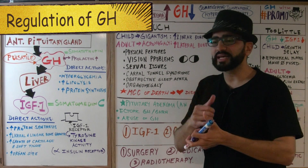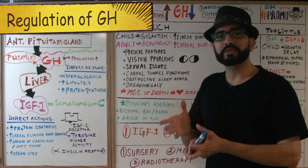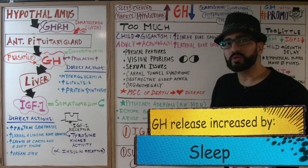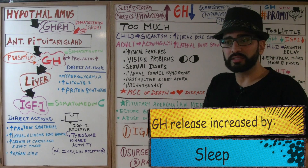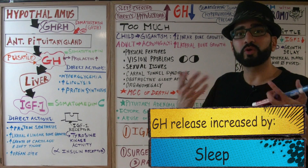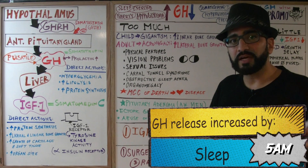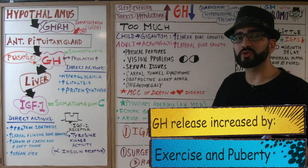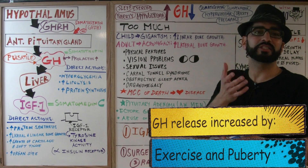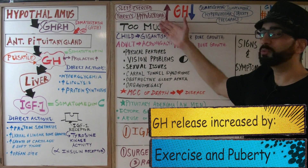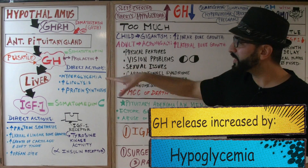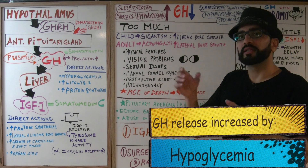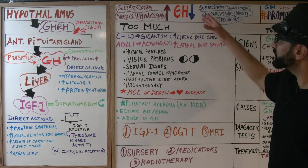Now let's talk about regulation — what increases and decreases growth hormone release. Things that increase growth hormone include sleep (the most growth hormone is released around 5 in the morning), exercise, puberty (which is why kids grow around ages 12–14), and hypoglycemia. Since growth hormone is a stress hormone that raises glucose, low glucose triggers its release.